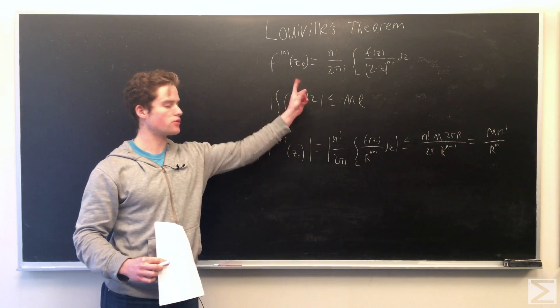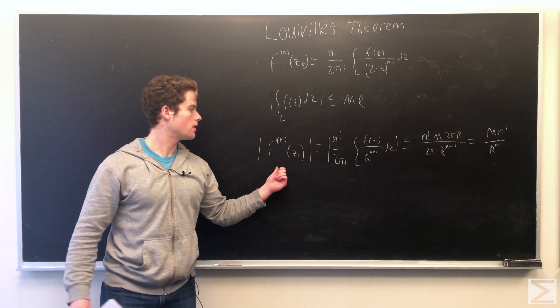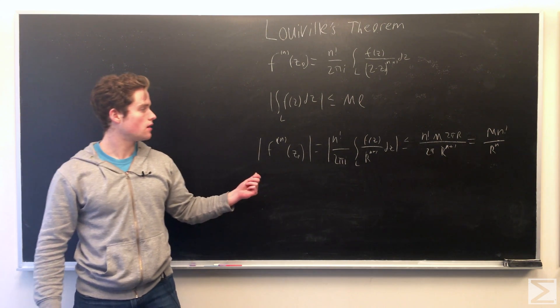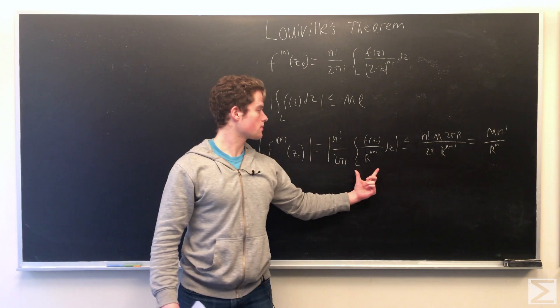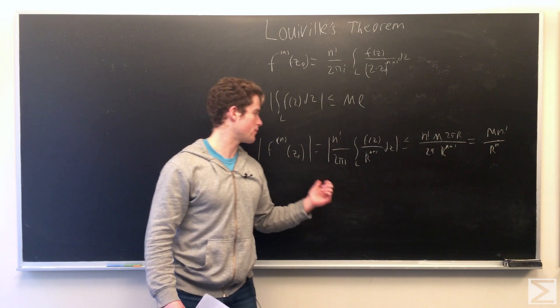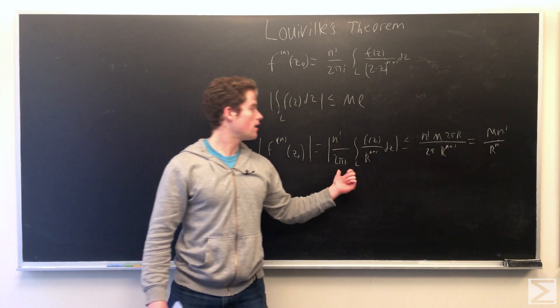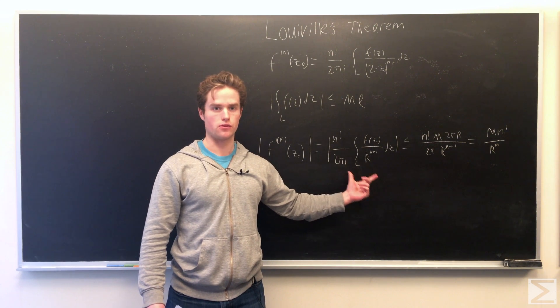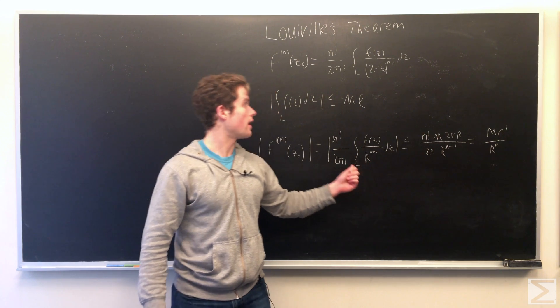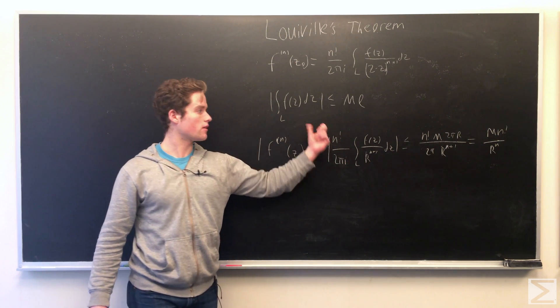So using these two, we're going to find an upper bound for the modulus of the nth derivative of f at z naught. So this equals, and we're taking this integral over some circle radius r contained in a domain where f is analytical. So it equals n factorial over 2πi integral over this curve f(z) over r^(n+1).